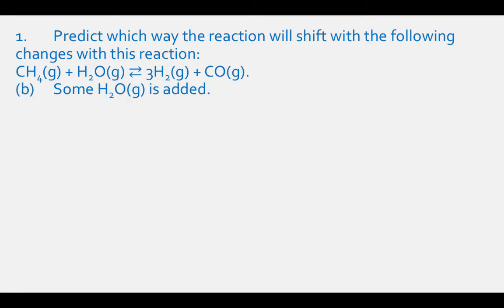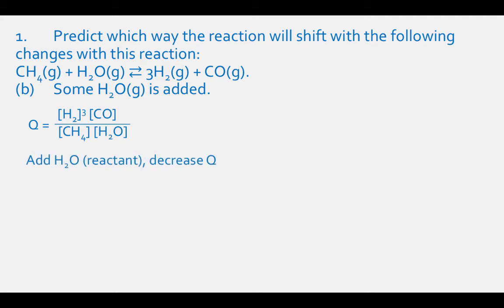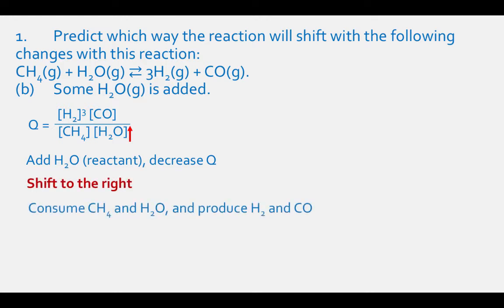For part B, when H2O is added, which is a reactant, you will lower the value of Q because we are increasing the denominator. Therefore, the reaction will respond by consuming reactants CH4 and H2O and producing products H2 and CO — the reaction shifts to the right.